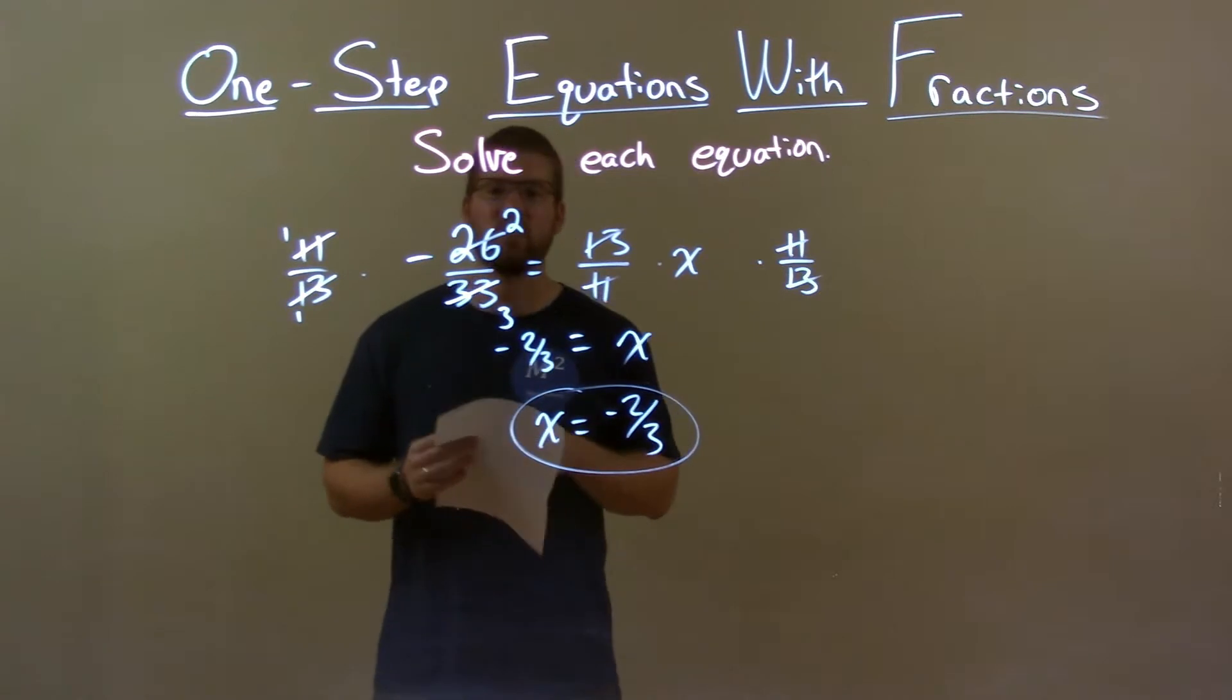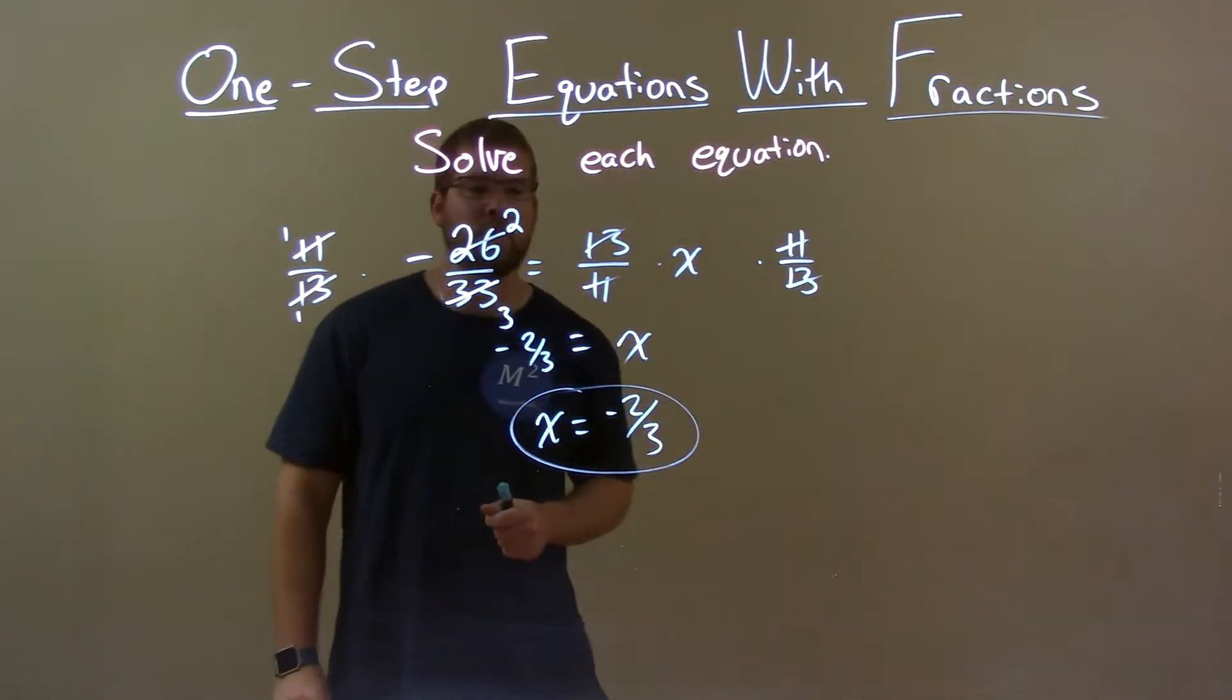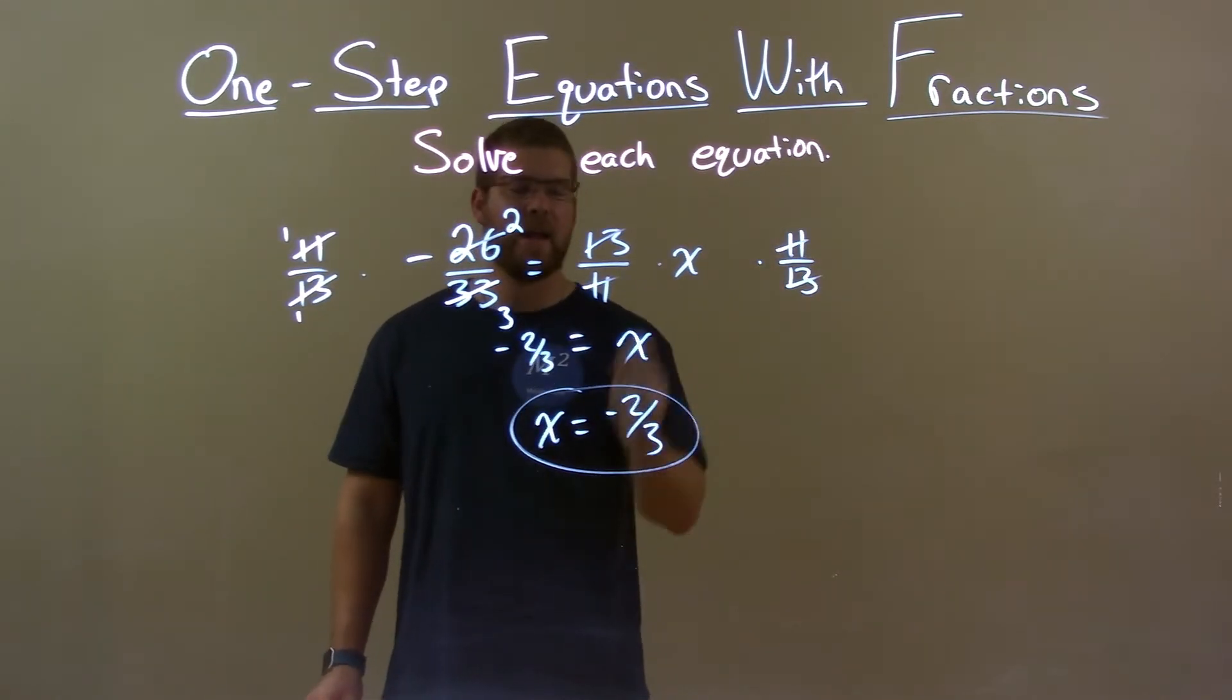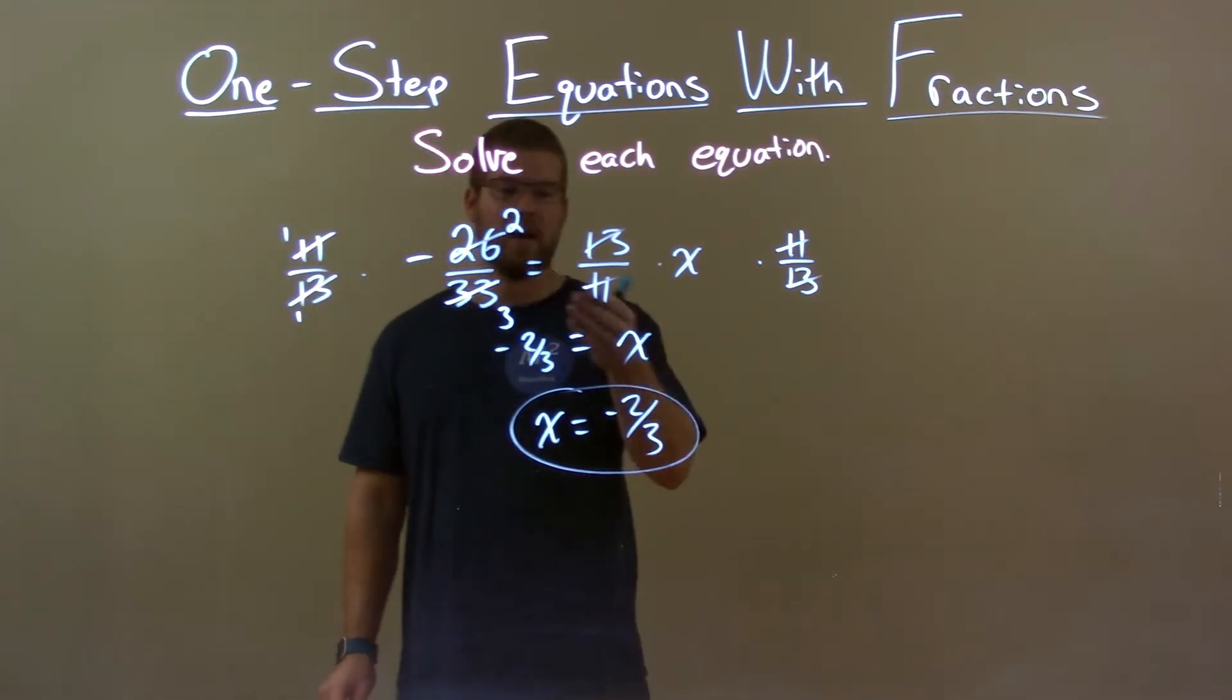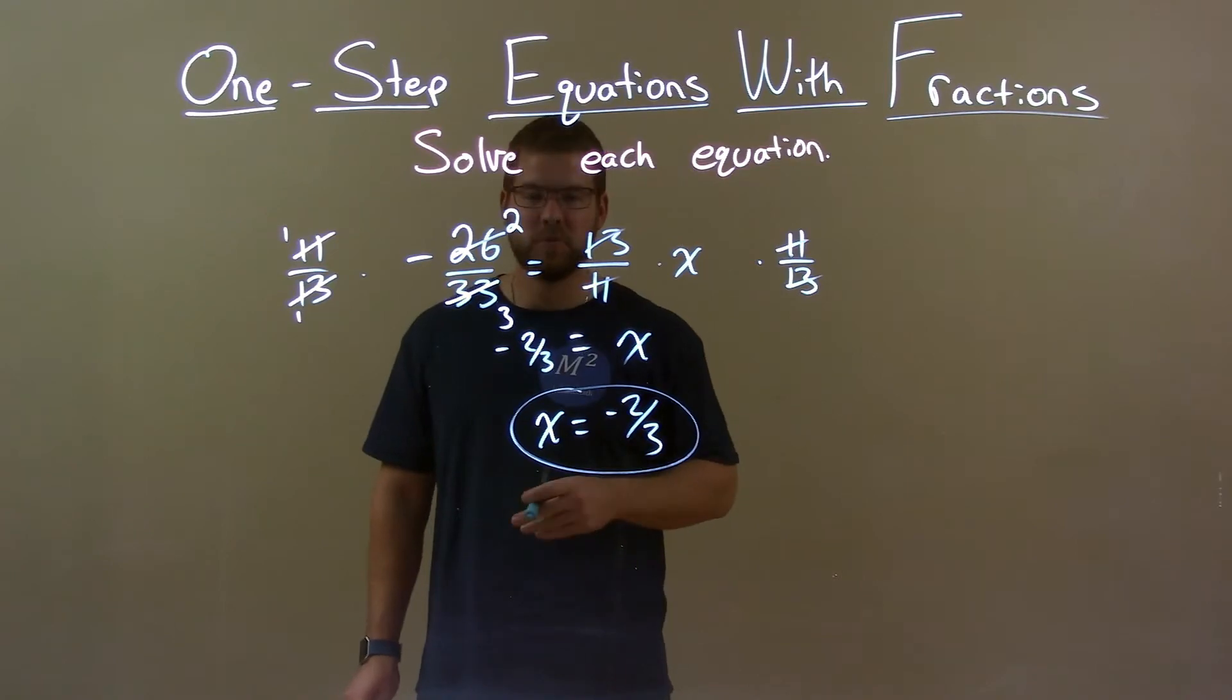Quick recap, we're given negative 26 over 33 equals 13 over 11 x and we have to solve for x. Multiply both sides by the reciprocal 11 over 13 to get x by itself on the right. On the left we simplify to get our final answer of negative 2 thirds. So here we have x equals negative 2 thirds.